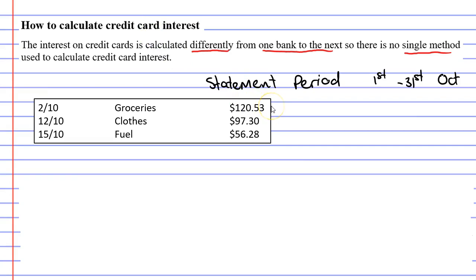Now because each item was purchased on a different date, it makes things a little bit more complicated. The groceries, for example, were purchased right at the beginning of the period on the 2nd of October, so they're going to accumulate interest for 30 out of the 31 days.